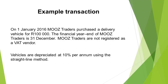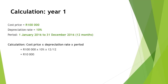For the purpose of this video, we will use the following transaction. On 1 January 2016, Moose Traders purchased a delivery vehicle for 100,000 Rand. The financial year end of Moose Traders is 31 December. Moose Traders are not registered as a VAT vendor. Vehicles are depreciated at 10% per annum using the straight line method.